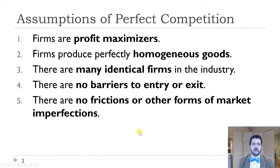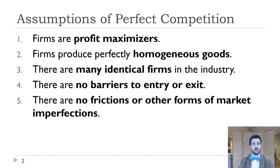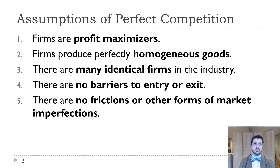Just a reminder of our assumptions for perfect competition. We assume that firms are profit maximizers, but they produce the same good as everybody else. This is most realistic in things like commodities — agricultural products, natural resources, things like oil or steel. It's all the same; there's nothing to differentiate the products.